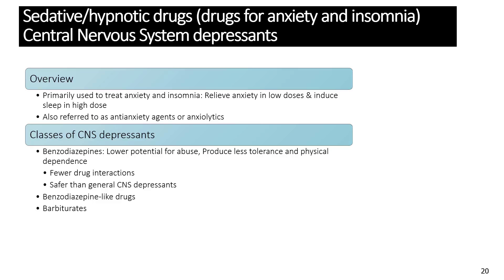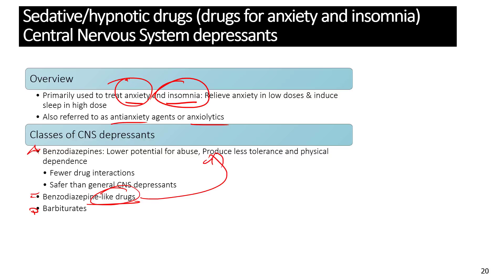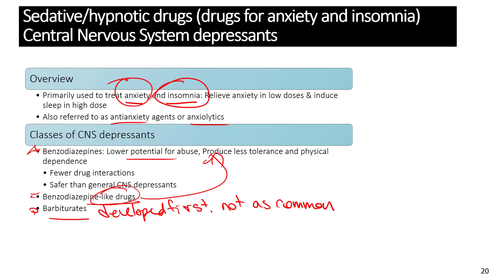CNS depressants are used primarily to treat anxiety (at low doses) and insomnia (at higher doses) and are also called anxiolytics. Two classes are benzodiazepines and barbiturates. Benzodiazepines have lower abuse potential, produce less tolerance and physical dependence, and are generally safer. Barbiturates were developed first but are less commonly used now due to higher abuse potential and risk of death from overdose.